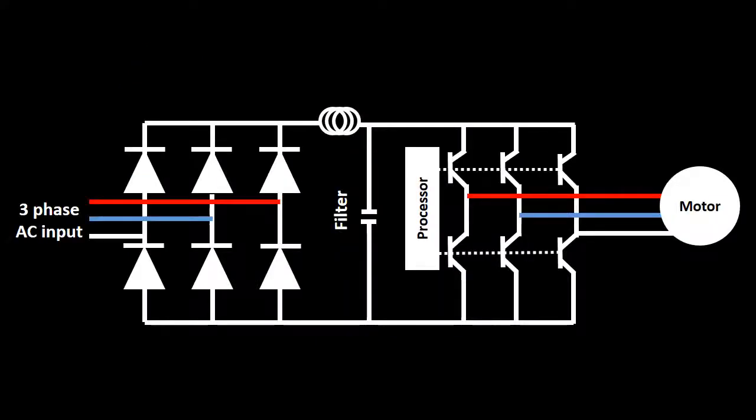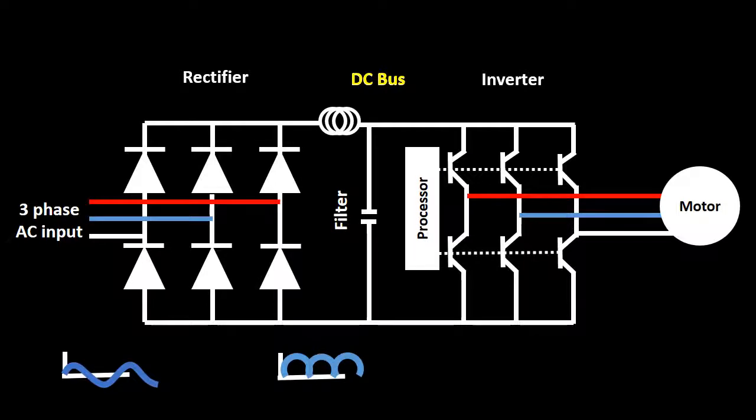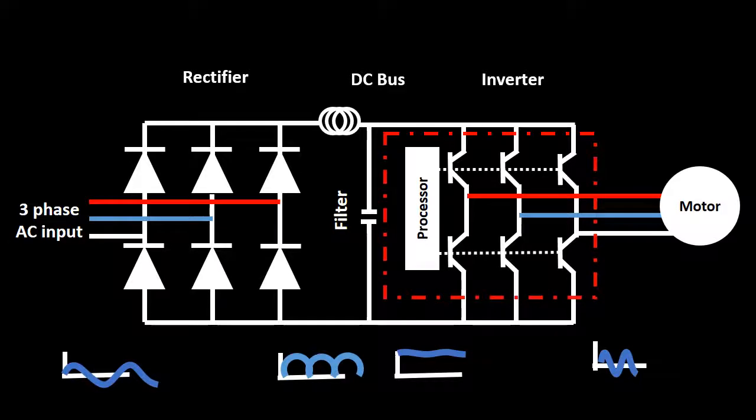We will now look at how a VSD achieves its variable output frequency. The construction of a VSD can be divided into three main sections: the rectifier, the DC bus, and the inverter. The AC input firstly passes through the rectifier onto the DC bus, which supplies the inverter DC input. The inverter then converts the DC back into AC at the chosen frequency. This is done by applying a switching pattern on the DC bus to approximate a sinusoidal output of the desired frequency.